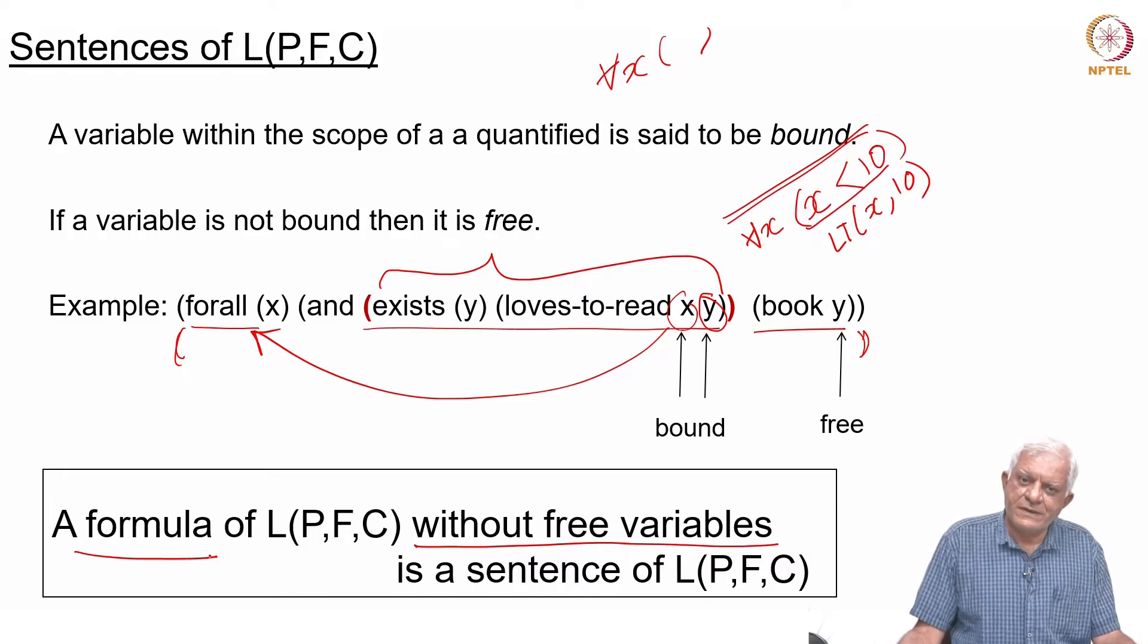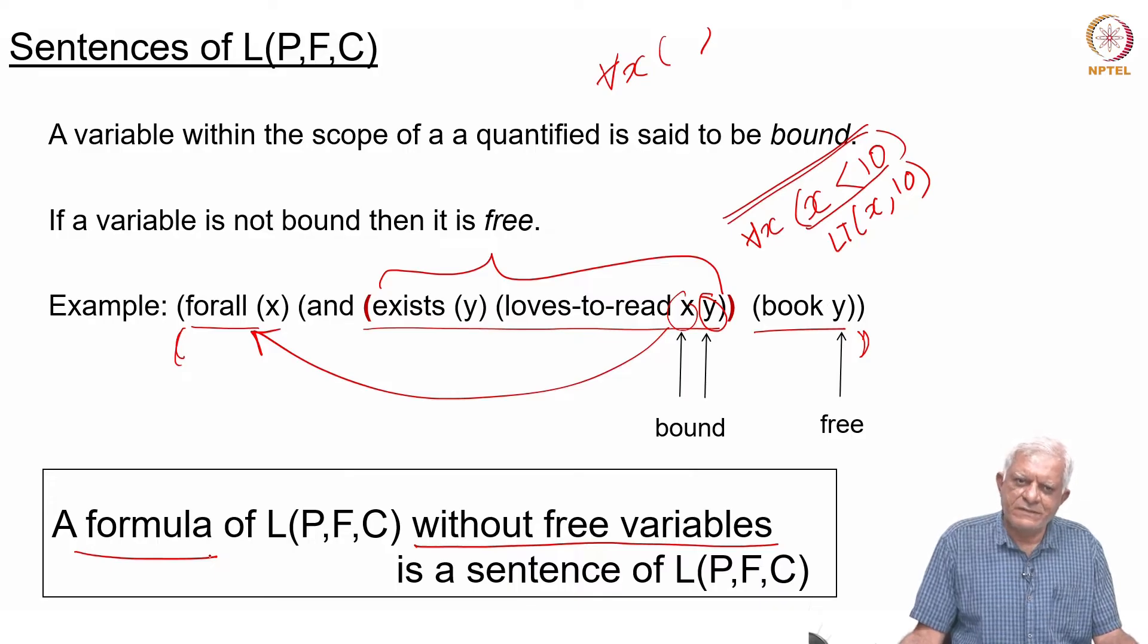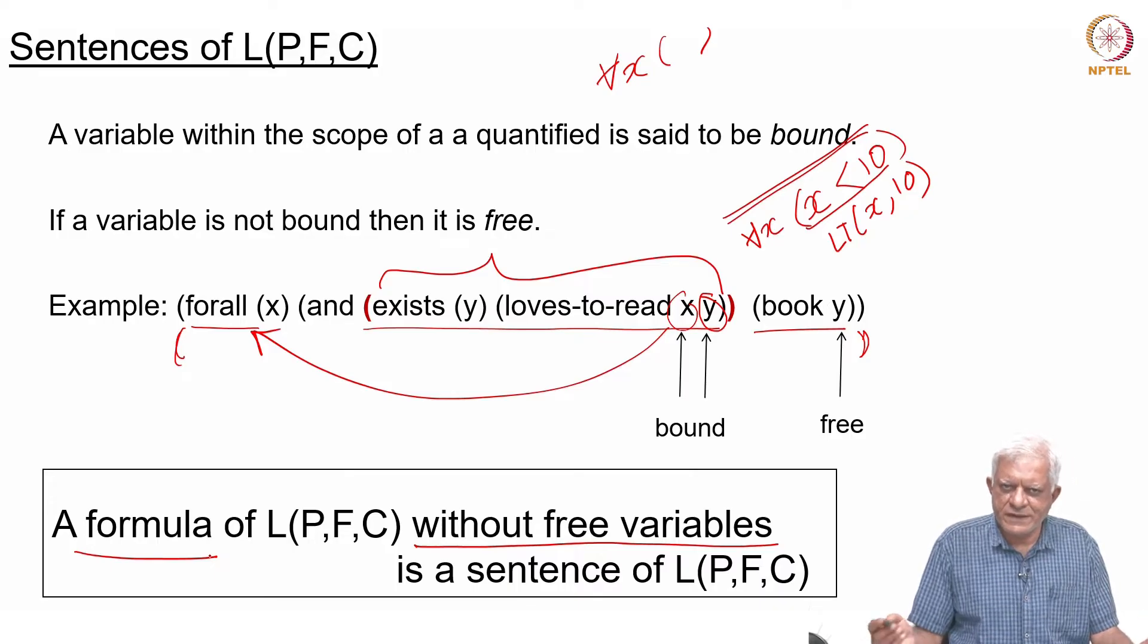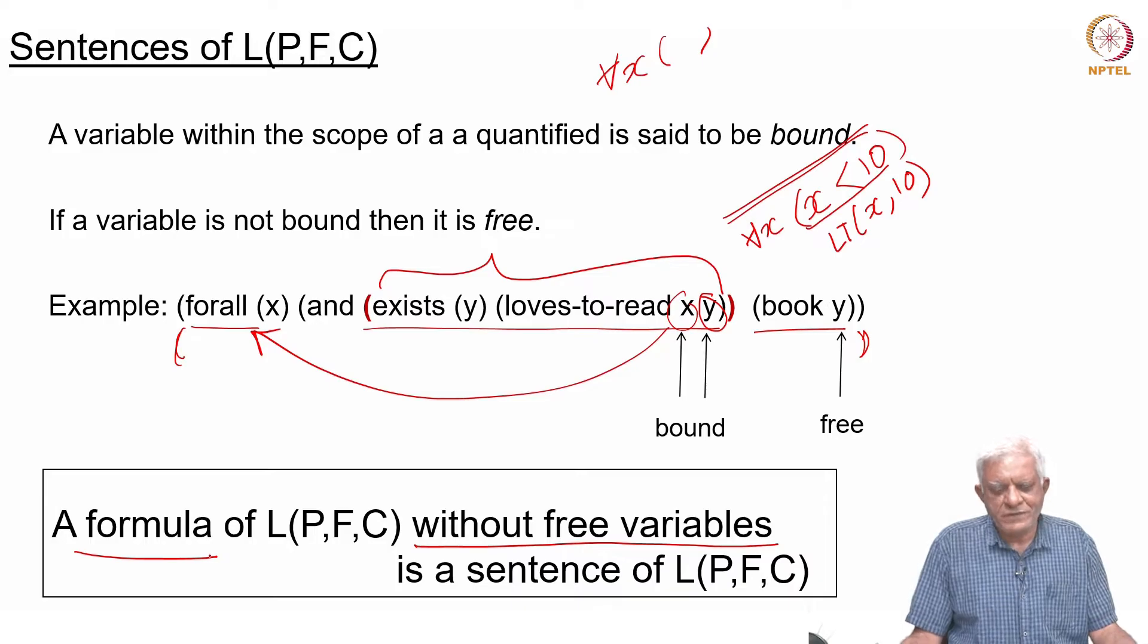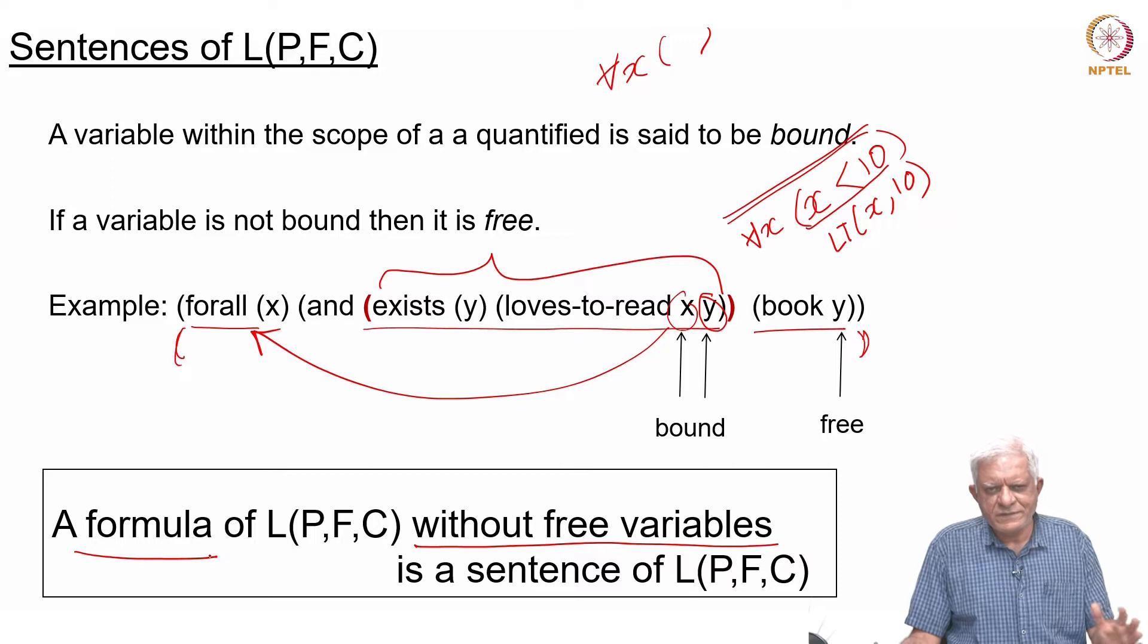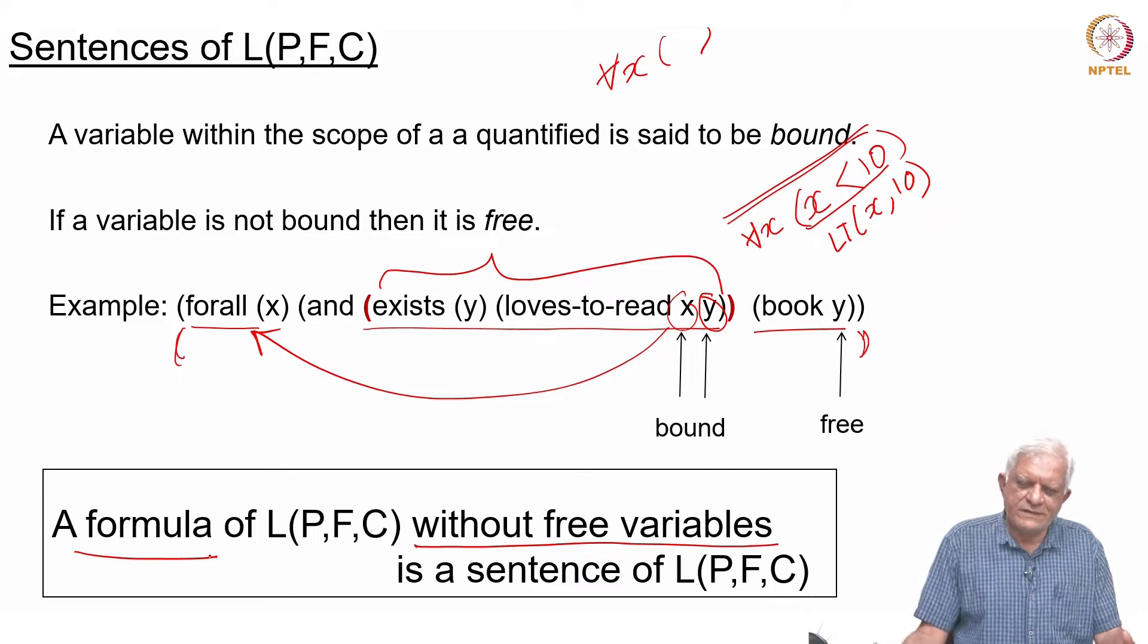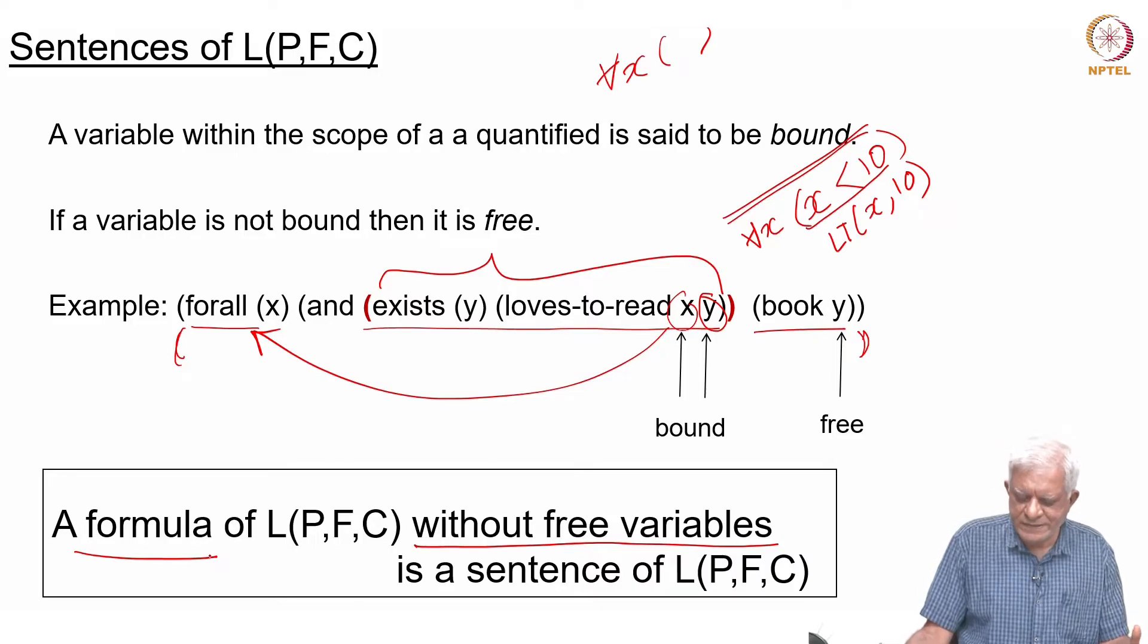Then we defined atomic formulas. There were two atomic formulas apart from bottom and top: one based on equality and one based on predicate symbols. Then we used logical connectives to create more formulas, and then we used quantifiers to create more formulas. We said that of all these well-defined formulas that we are creating, those formulas in which there are no free variables are sentences.